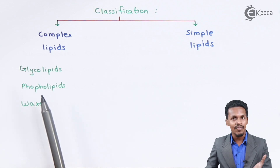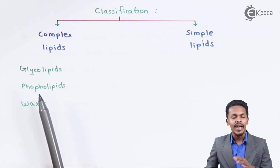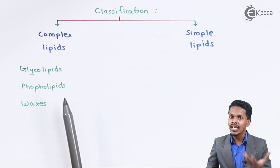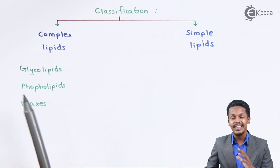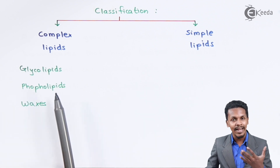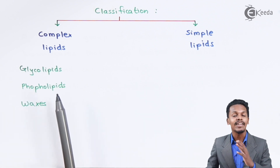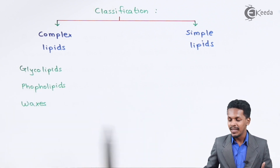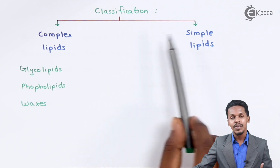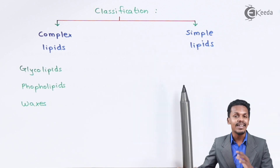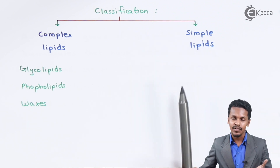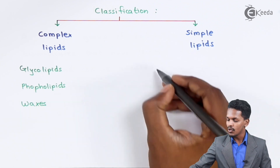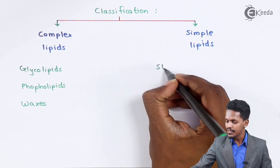Talking about oils and fats: these depend on saturated and unsaturated fatty acids. Oils and fats consist of an acyl group, but in the case of simple lipids there is no acid group. Examples of simple lipids include steroids and terpenes.